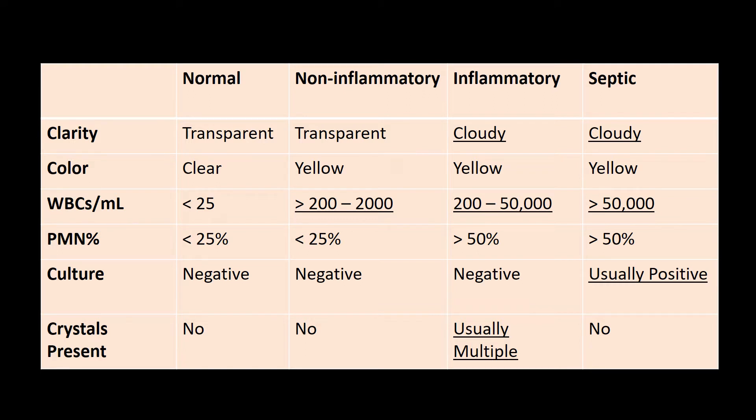Perform an arthrocentesis when you see a patient come in with a monoarticular arthritis — you should have high suspicion for a septic joint. You still need to do the analysis for fluid because you want to determine if the origin is normal fluid versus non-inflammatory, inflammatory, or septic in nature. The table briefly walks through all those different possibilities.